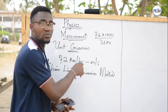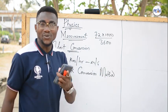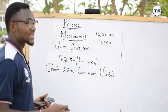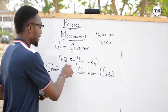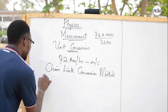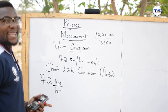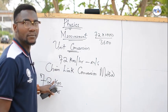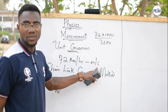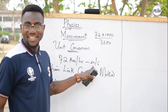The chain link conversion method is very simple. The first step: write out your quantity clearly — 72 kilometers per hour. Look at the numerator: we have kilometers. The denominator is hours. We are going to a numerator of meters and a denominator of seconds. You need to focus on converting the numerator first, then convert the denominator to the desired destination unit.